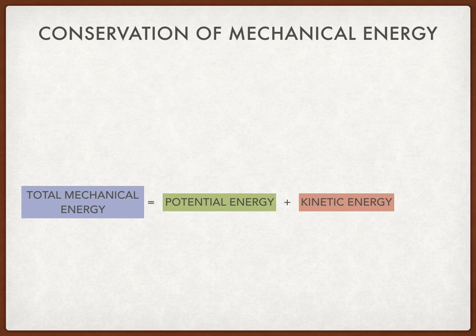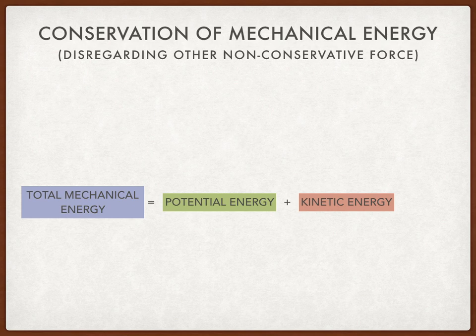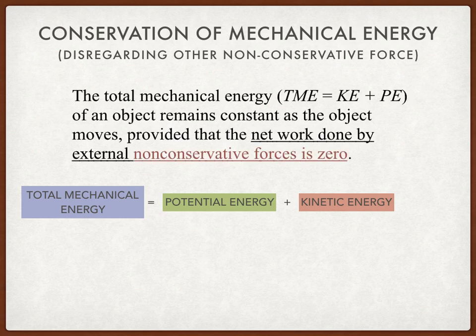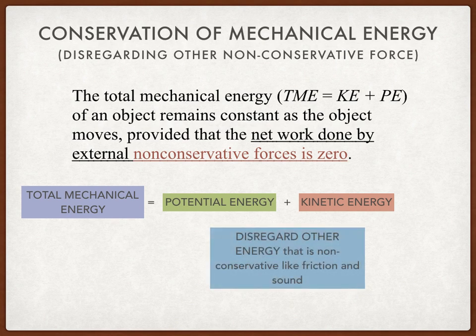How about considering only the mechanical energy? This is the conservation of mechanical energy. We disregard other non-conservative forces. The total mechanical energy equals potential energy plus kinetic energy. The conservation of mechanical energy states that the total mechanical energy — KE plus PE — of an object remains constant as the object moves, provided that the net work done by external non-conservative forces is zero. In other words, you disregard non-conservative energy such as friction and sound.